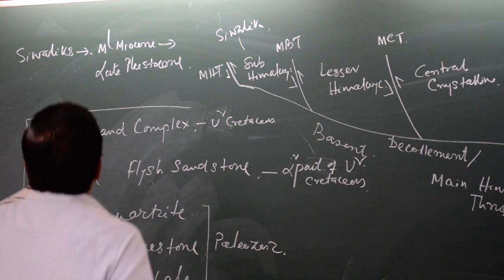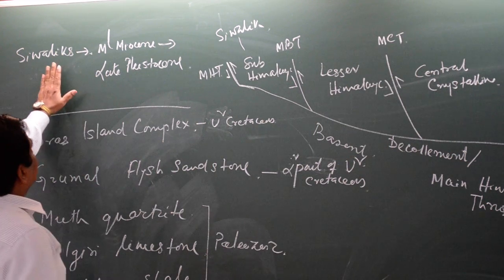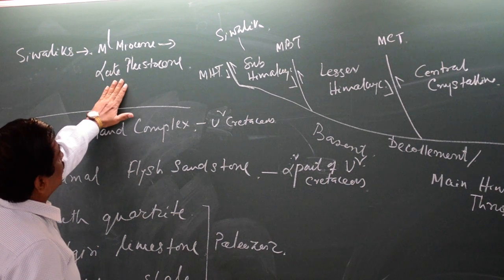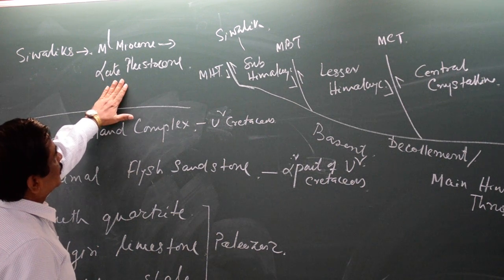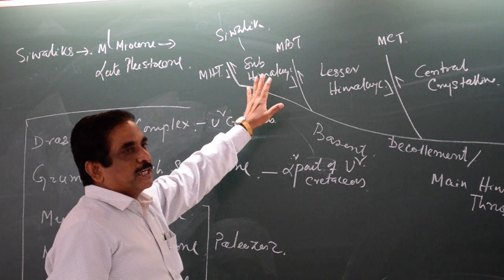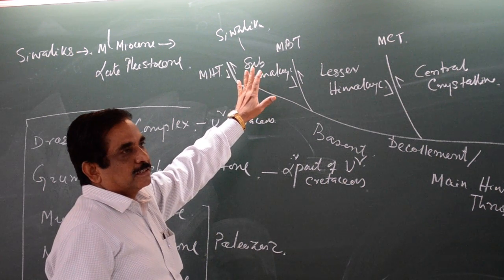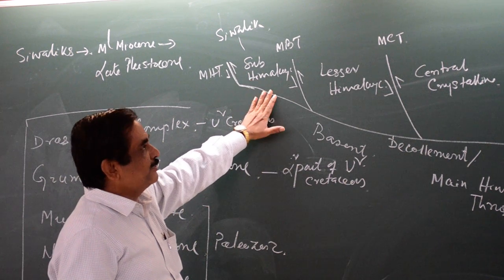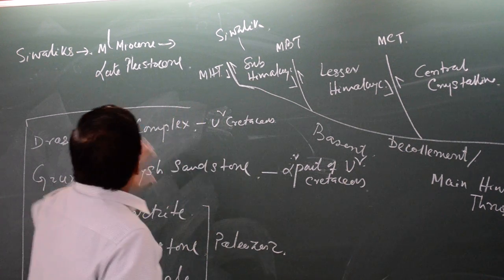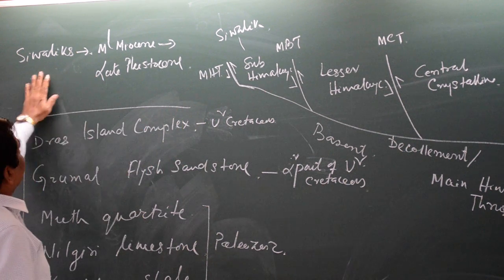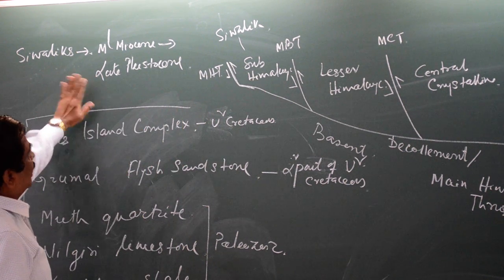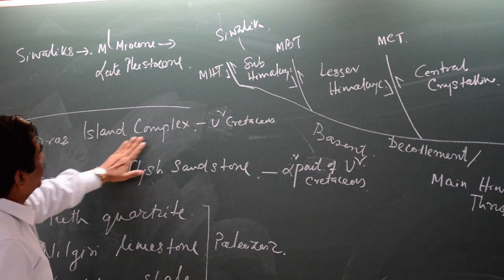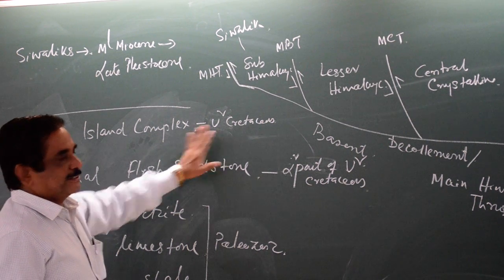So, read it — Siwaliks, Middle Miocene to Late Pleistocene. What section can you draw? Drawing the section is important, with the reference I am discussing. Siwaliks, Middle Miocene to Late Pleistocene. Flysch Island Complex, Upper Cretaceous.